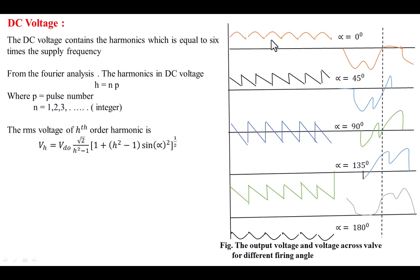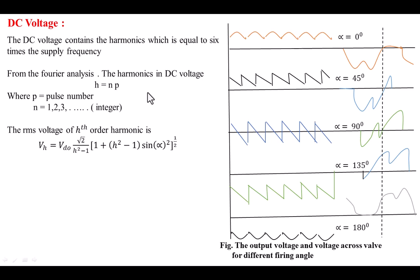The harmonic order in the output DC voltage is equal to H = N × P, where N is an integer changing from 1, 2, 3, and P is the pulse number. For this 6-pulse converter, P = 6. The RMS voltage of the Hth order harmonic is VH = VD0 · √(2 / (H² − 1)) · √(1 + (H² − 1)·sin²α). If we take N = 1, the first harmonic order is 6. If N = 2, the harmonic order is 12. Continuing: 6, 12, 18, 24 — these are the harmonics present in the output voltage.